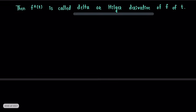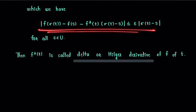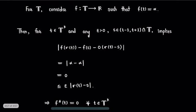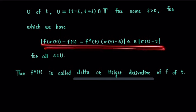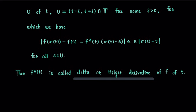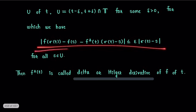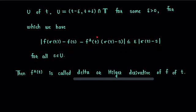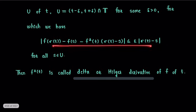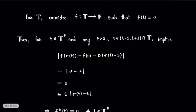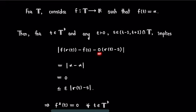By definition, we examine |f(σ(t)) − f(s) − 0·(σ(t) − s)|. We have replaced f^Δ(t) by 0, since we need to prove that the derivative of the given function is 0. We will verify whether this condition is satisfied. So we get |f(σ(t)) − f(s) − 0·(σ(t) − s)|, since f^Δ(t) is taken equal to 0.